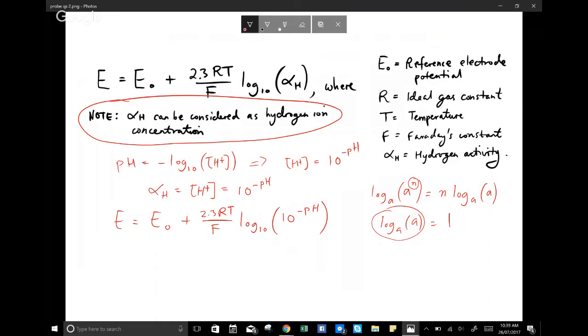And that's really, really handy. So this whole term here is down to negative pH. So our equation is actually this. I'll put the negative now, negative 2.3 RT on F times pH. Times pH.